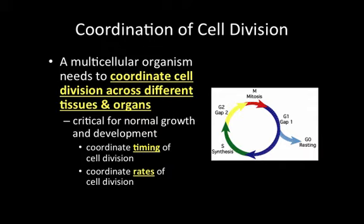An organism made up of many cells needs to coordinate cell division very precisely. Different cells grow at different rates, and it's really important to coordinate when and at what rate these cells divide. Some cells divide faster than others — that's necessary because some cells, like skin cells, are exposed to the environment and need to be replaced rapidly, while internal organ cells like liver cells don't need to be replaced as quickly.